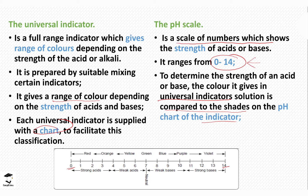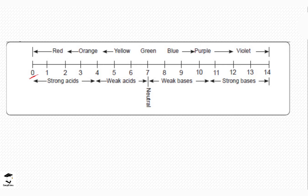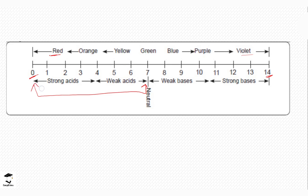Looking at the pH scale in detail: it begins from 0 to 14, with different colors ranging from red at one end to violet at the other. The pH increases depending on the strength of the acids and bases. The range of 0 to around 6.5 shows the strength of acids, and pH 8 to 14 shows the strength of bases. For acids, pH 0 to 3 indicates strong acids.